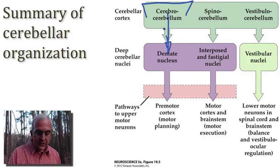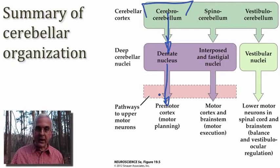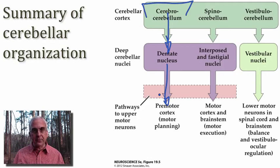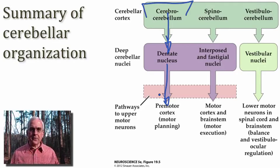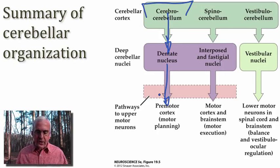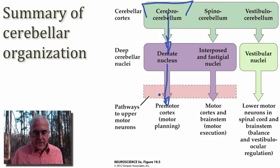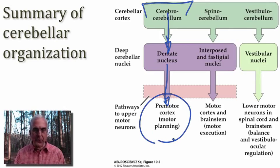The dentate nucleus sends its output through the superior cerebellar peduncle up to the circuitry of the motor thalamus, which engages our premotor and motor cortex. We think this part of the cerebellum is especially concerned with coordinating, organizing, and perhaps even planning the skilled execution of behavior that we do with our hands and feet, because the output of the dentate nucleus largely engages circuits impacting the premotor cortex.